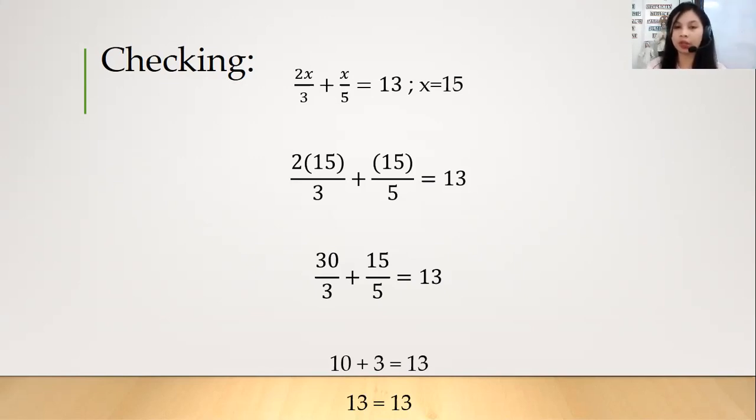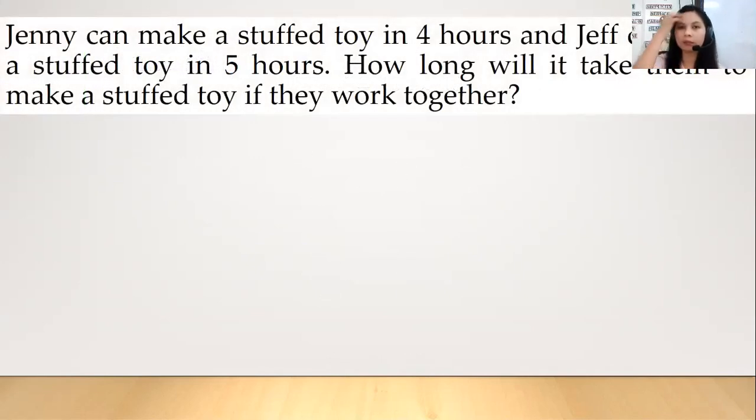Okay, so ganun lang siya. So meron pa akong next example. Ayan. So Jenny can make a staff toy in 4 hours and Jeff can make a staff toy in 5 hours. How long will it take them to make a staff toy if they work together? Okay. So ayan yung ating equation po. So ang tanong kasi dyan, kapag nagtulungan, ilang oras yung itatagal kapag nagtulungan po silang dalawa gumawa ng staff toy po. Kaya addition yung ginamit nating operation.